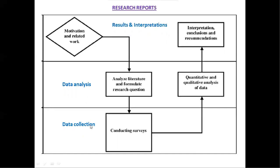Research has three important steps. The first is data collection, where data is collected through surveys, then organized and recorded. The second is data analysis, where data is analyzed based on variables — both quantitatively and qualitatively. The third is results and interpretations, where variables are interpreted using graphs and data charts, and the research is finally concluded.